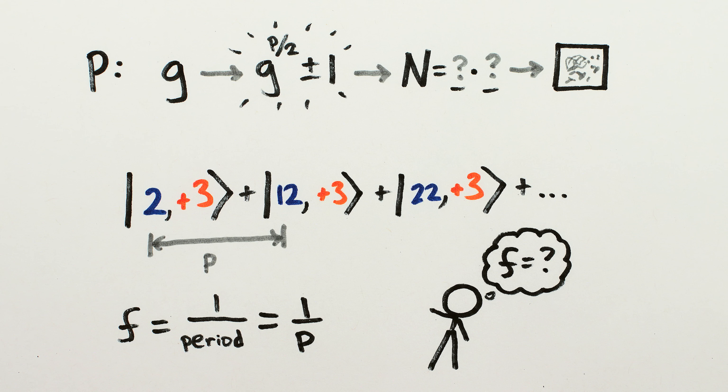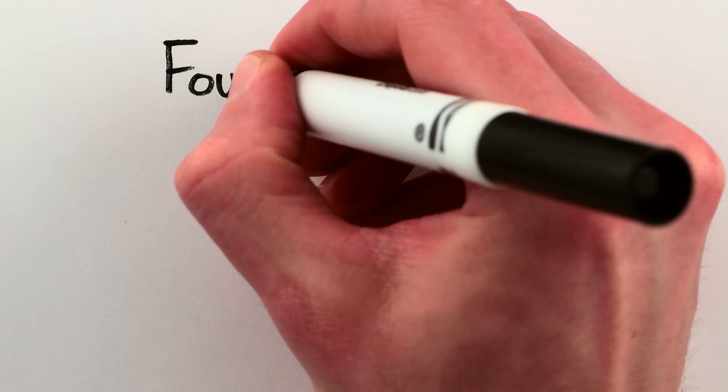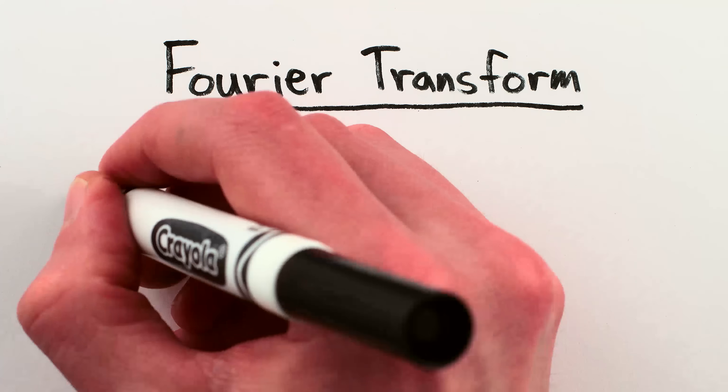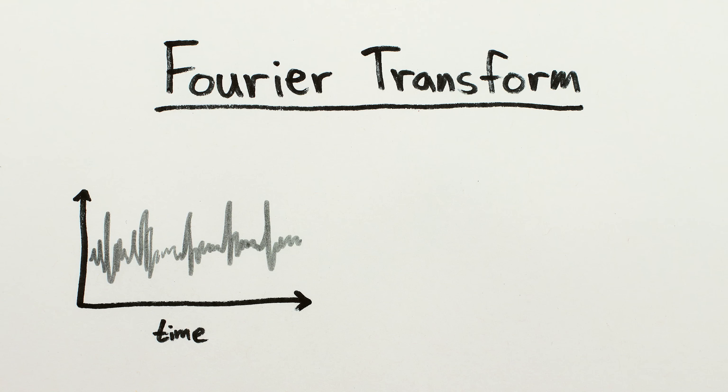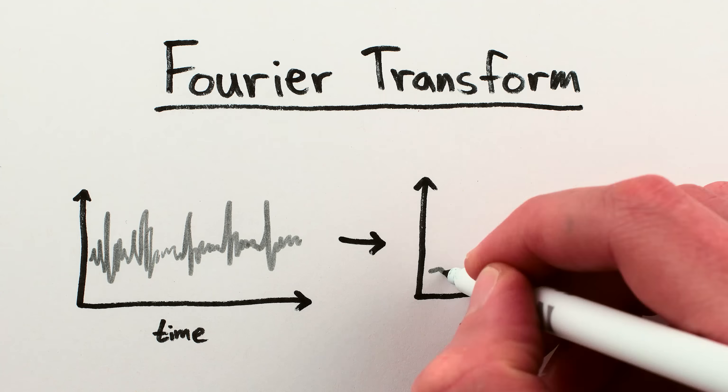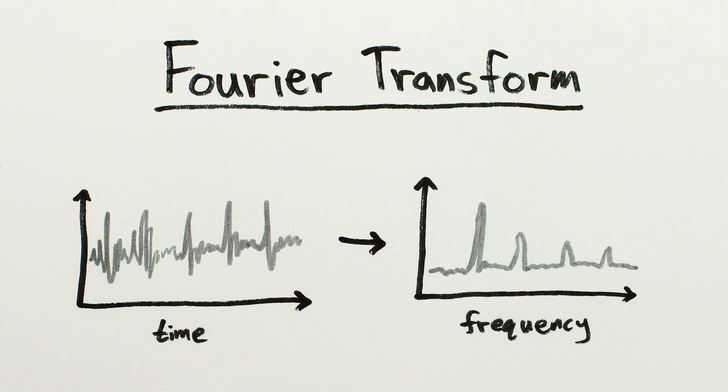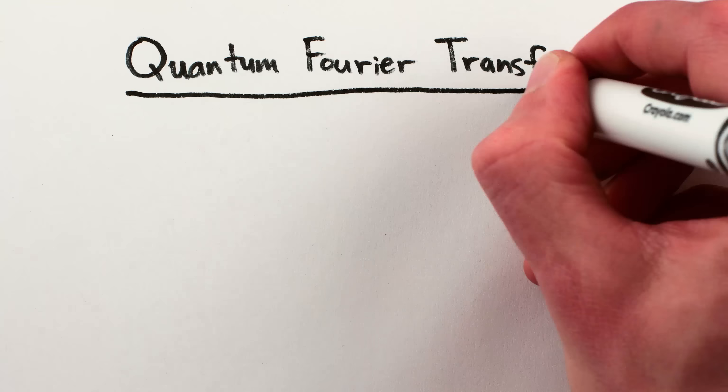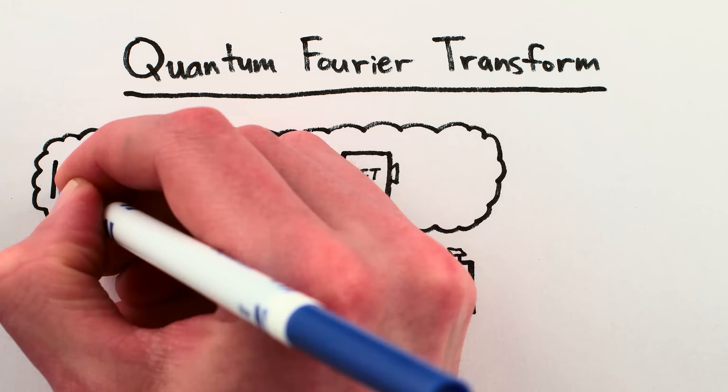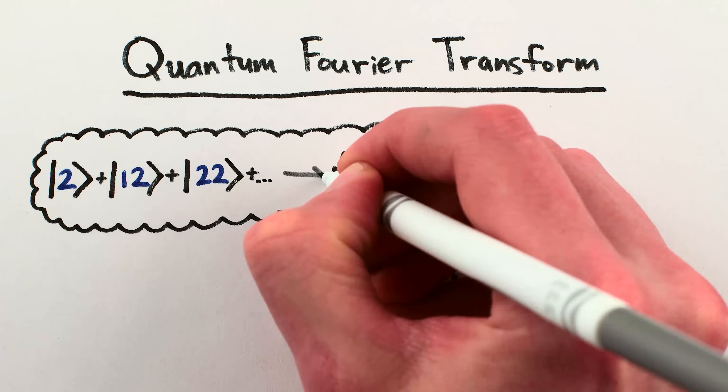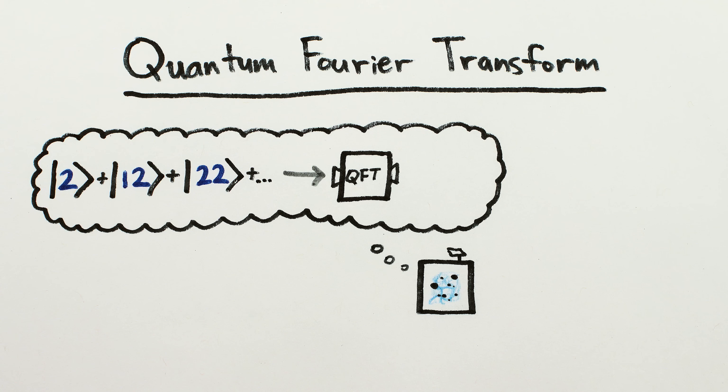And by far the best tool to find the frequencies of things is called a Fourier transform. Fourier transforms are what allow you to input an audio signal as a wave and convert it into a graph showing the different frequencies that the wave is made up of. And there's a quantum version of the Fourier transform, which we can apply to our superposition that repeats with a frequency of 1 over P, to cause all the different possible frequencies that aren't present to destructively interfere, leaving us with a single quantum state, the frequency 1 over P.